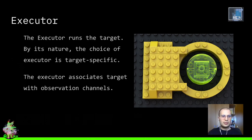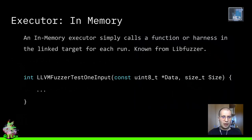The executor is deeply associated with the observation channel; in our design, observers are even contained inside the executor. A possible example — the most simple example of executor — comes from libFuzzer: the in-memory executor, in which the input is just passed as an argument to a harness function, and the execution of the target program is just the execution of this function. It is the most simple possible executor we can imagine.